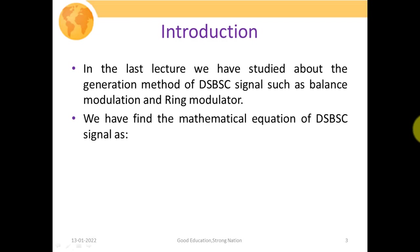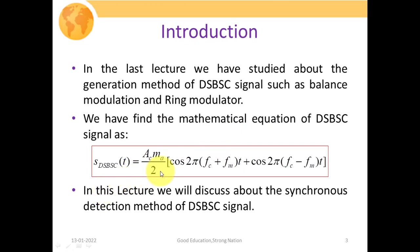In our last lecture, we studied about the generation methods of DSBSC signal such as balanced modulation and ring modulator. We also found the mathematical equation of the DSBSC signal: DSBSC(t) = (Ac · ma / 2) · cos(2π(fc + fm)t), which is the upper sideband, plus cos(2π(fc − fm)t), which is the lower sideband. So in our DSBSC signal, we possess both upper and lower sidebands.